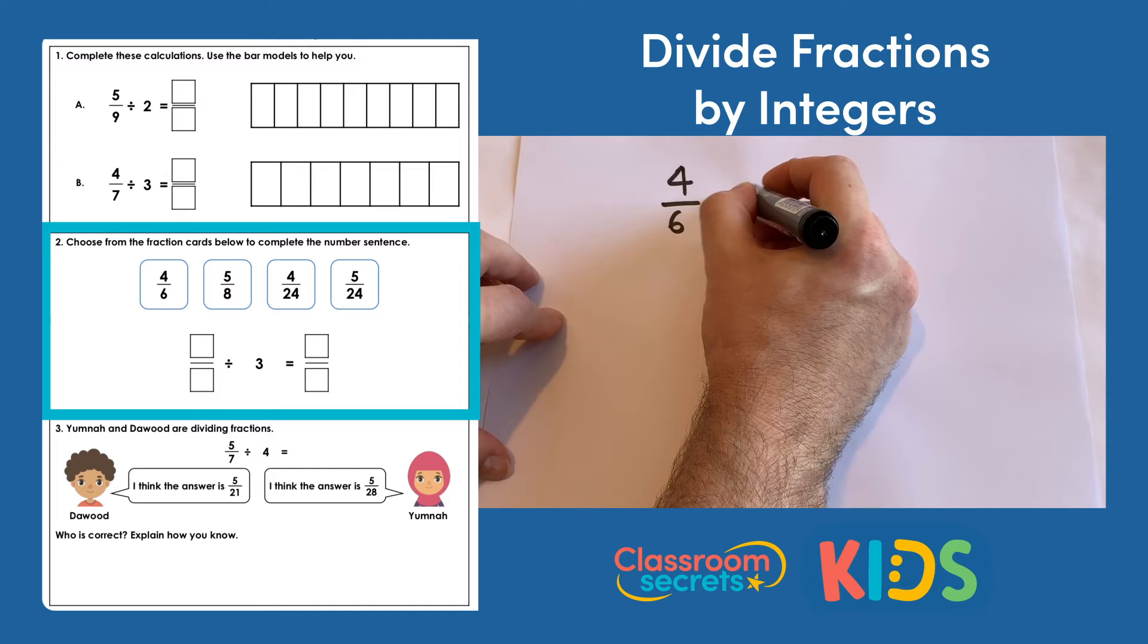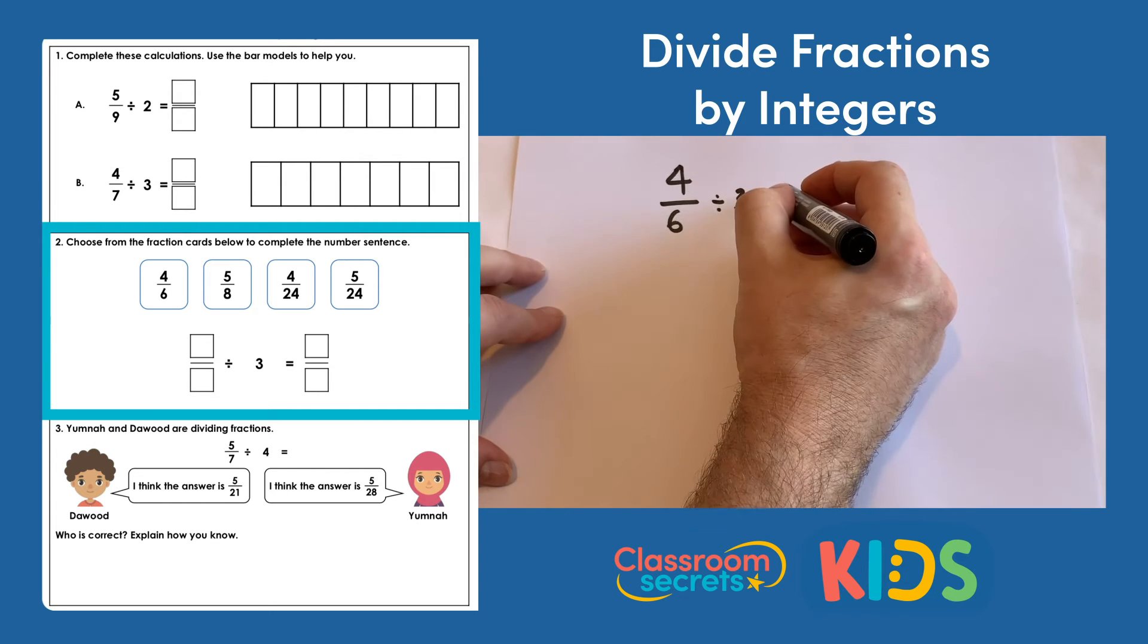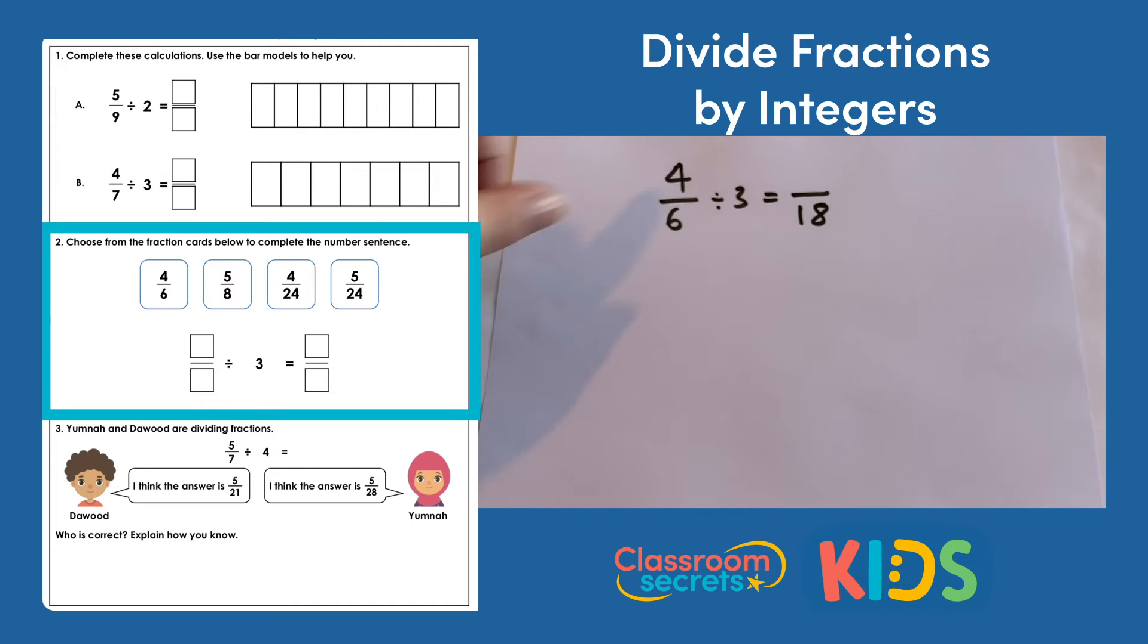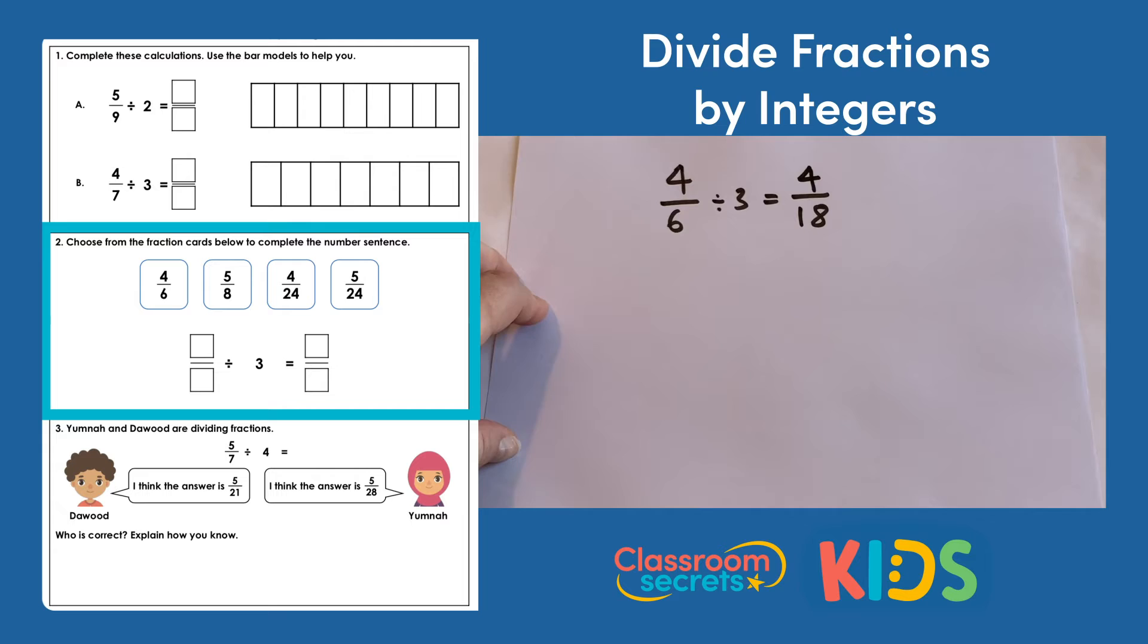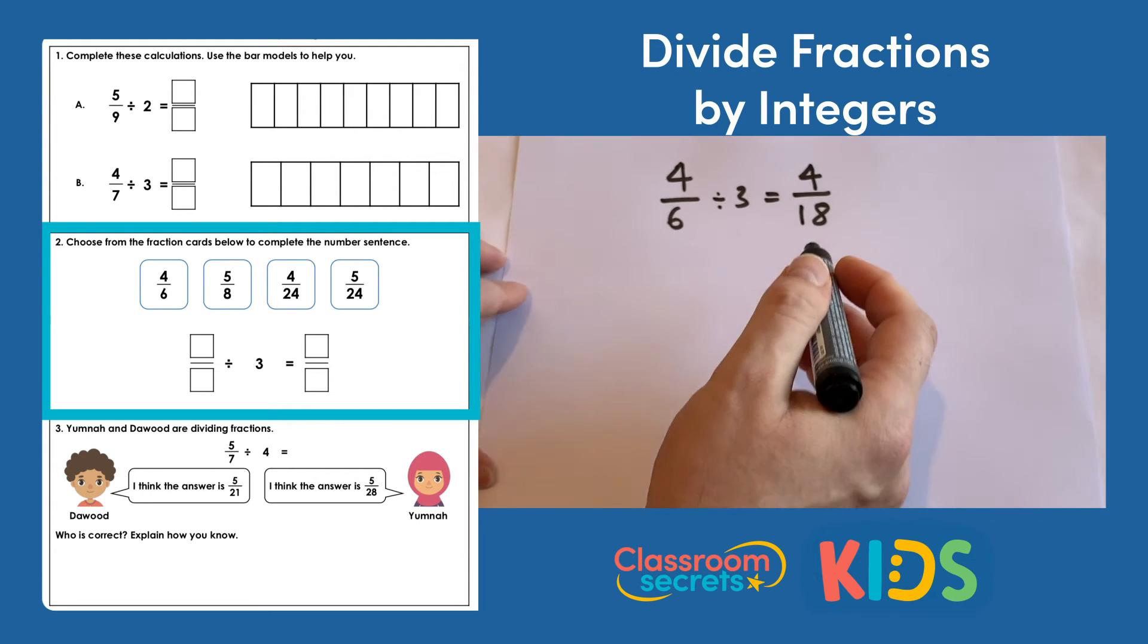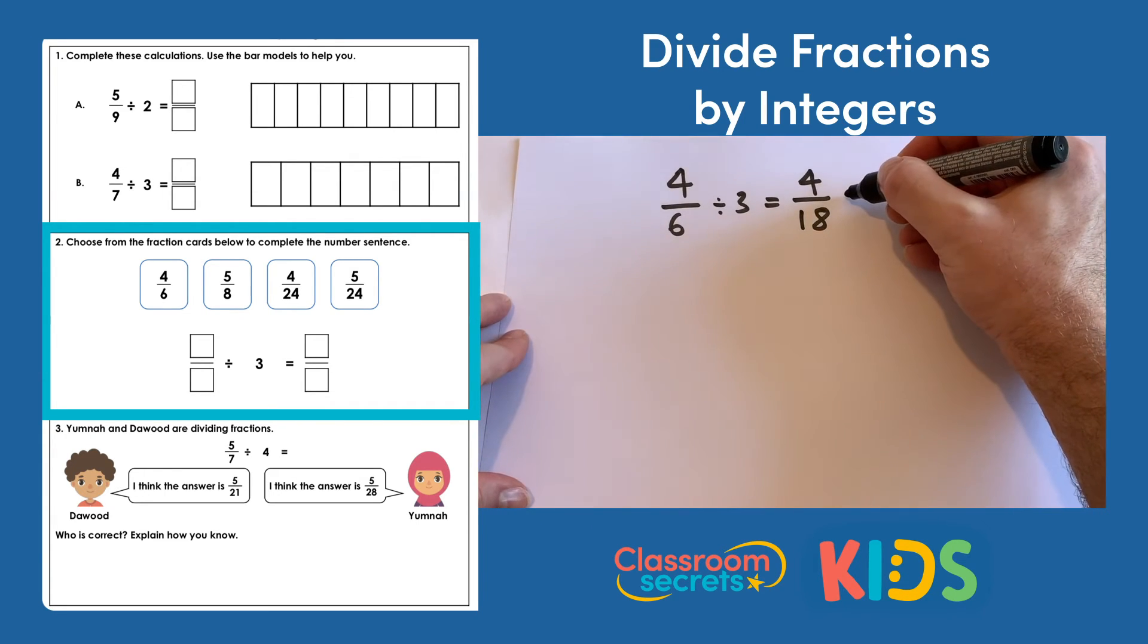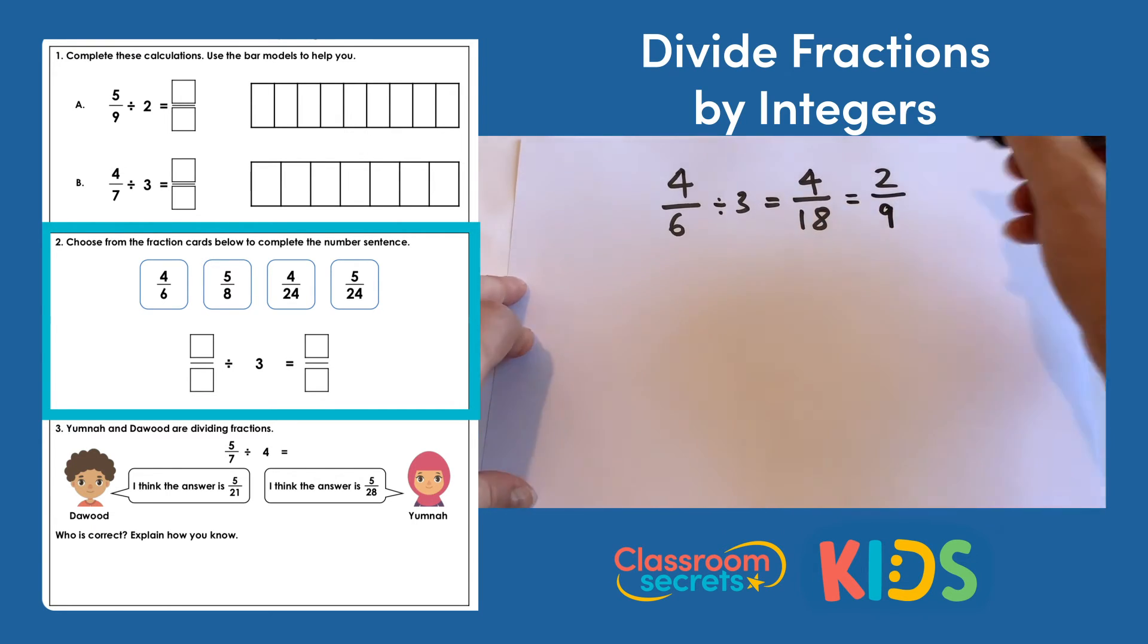So 4 sixths divided by 3. So we'll be splitting the sixths into 3 equal parts. So out of the whole there we'd have 18. We'll have 18 equal parts and we'll be looking at 4 of those. So 4 sixths divided by 3 will be 4 eighteenths. Now we don't have any of those on our fraction cards. We could simplify 4 eighteenths down though. So we could divide each of those by 2 which would make 2 ninths. But we still don't have that as a fraction card.